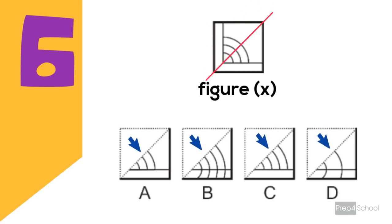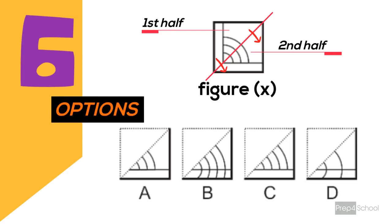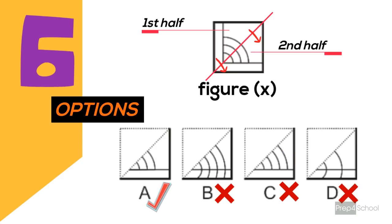Problem number six: here the dotted line is along the diagonal on the left side, so the folding will be to the right side. When you fold the first half into the second half, the image is again embedded to the second portion because the mirror image of the first half is the same as its original. Option A is correct. In option B the number of bracket-shaped structures increases by one; in C there are also four bracket shapes; and in D one such shape is missing. So the correct answer is option A.